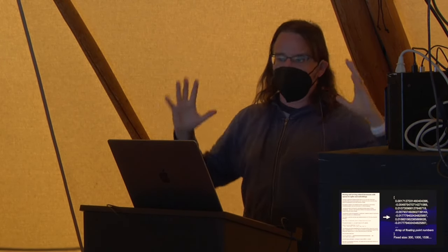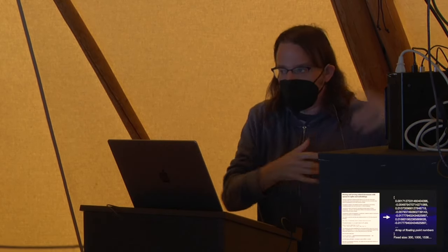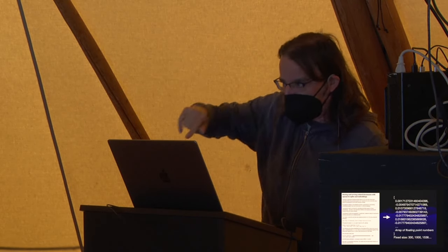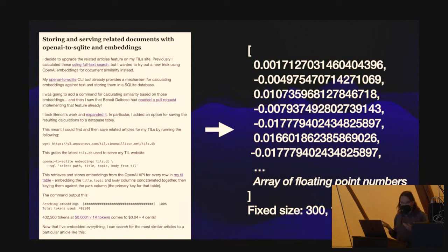I'll start with a high-level idea of what embeddings even are. Embeddings is a trick: you take a piece of content - in this case, a blog entry - and you turn that piece of content into an array of floating-point numbers. That's the entirety of the trick. You take content in whatever shape it is and you turn it into this array of numbers. The key thing is it's a fixed length - based on the embedding model you're using, you'll get back 300, 1,000, or 1,536 floating-point numbers.